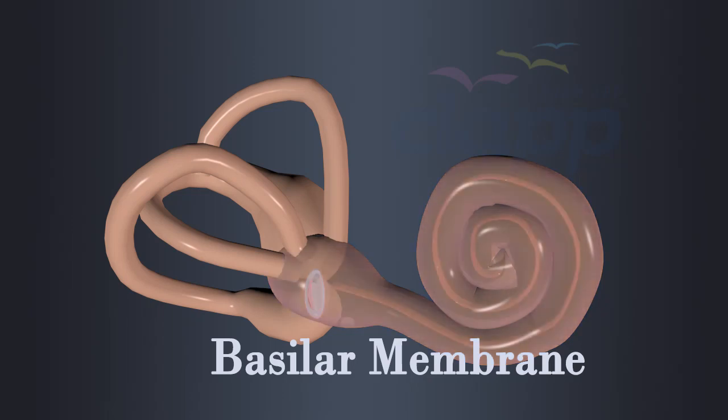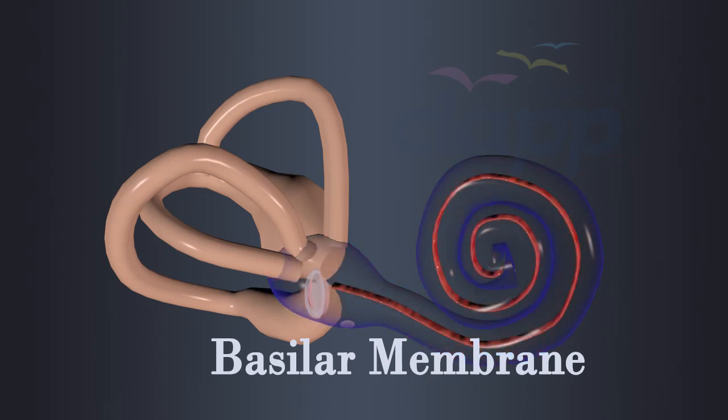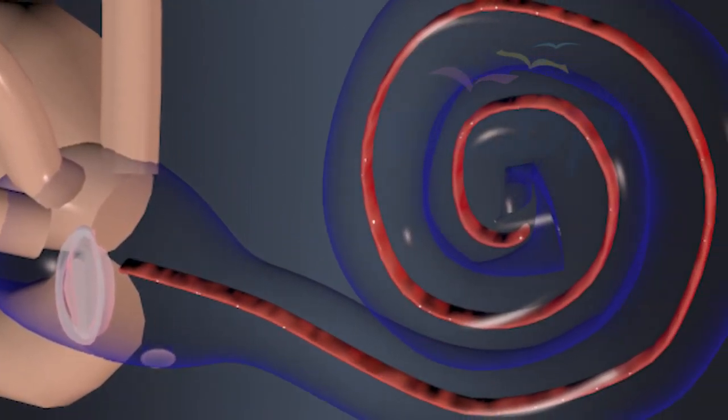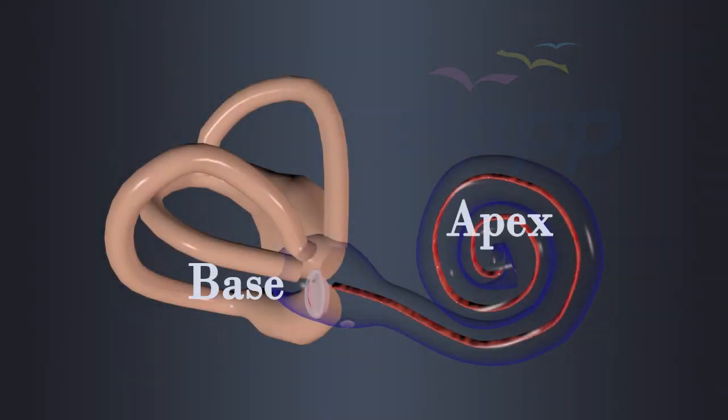Basilar membrane extends along the entire length of cochlea. This membrane varies in stiffness from base to apex. High frequency sound waves cause vibrations near the base and low frequency sounds cause vibrations near the apex.